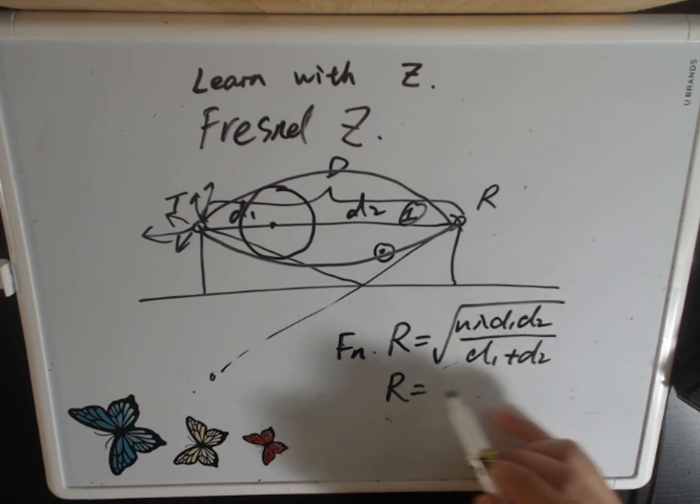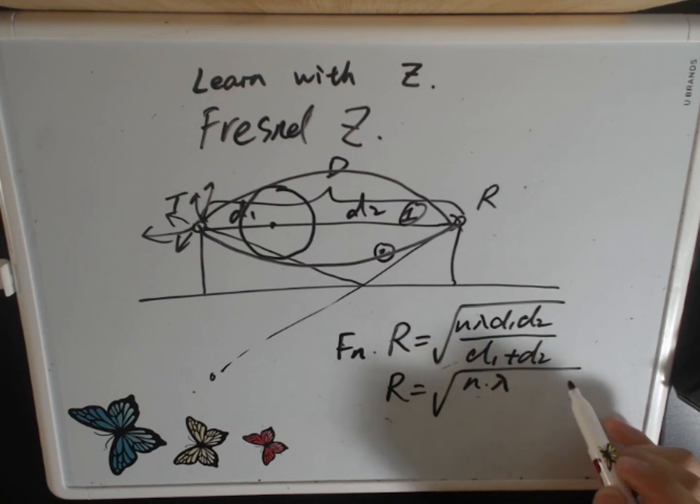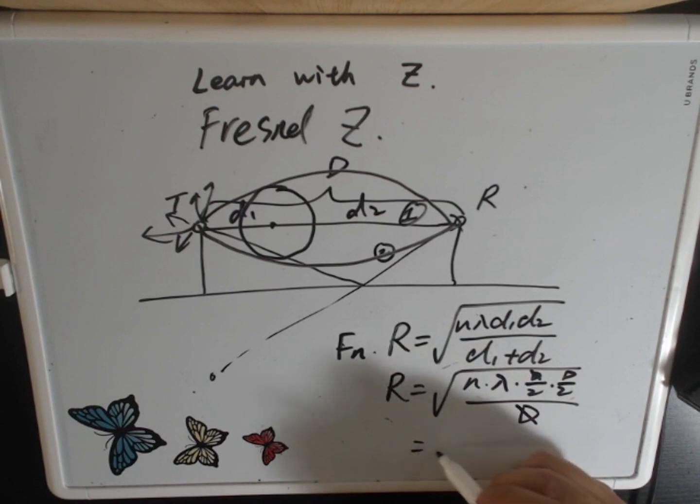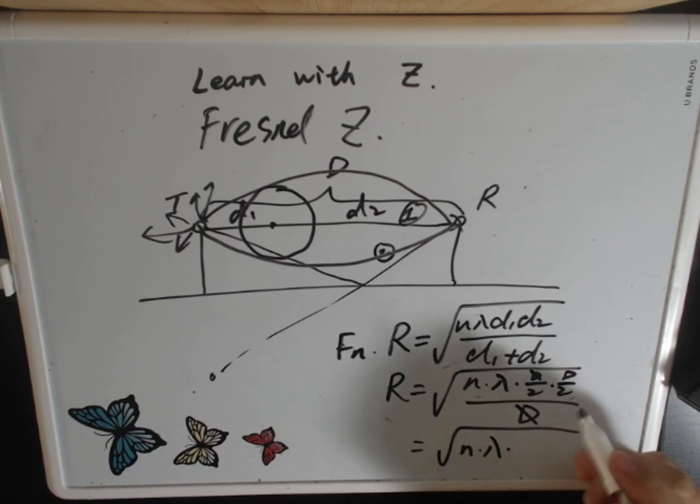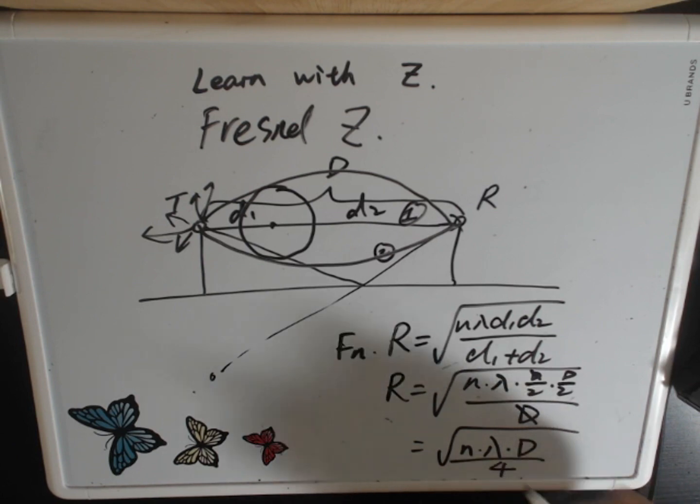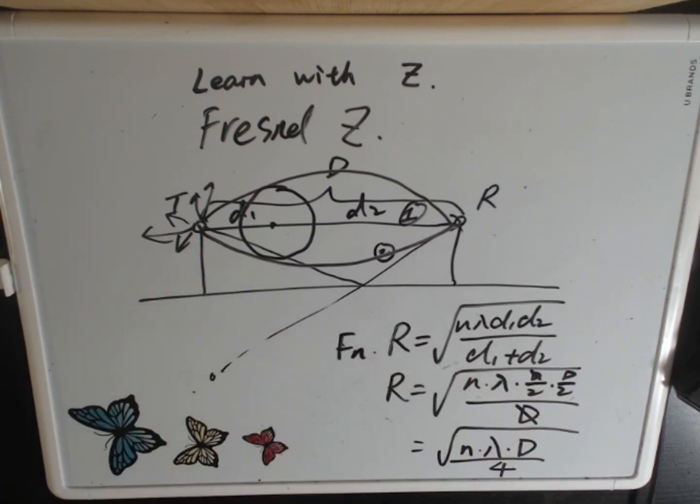n times wavelength. And we cancel one out, this will turn it to n wavelengths D divided by 4. From this, what can we know? We know two things.